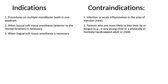The indications of this block include procedures involving multiple mandibular teeth that need to be operated or extracted in one quadrant, and buccal soft tissue anesthesia whenever required. When lingual soft tissue anesthesia is necessary, this block is also indicated. Contraindications include infection or acute inflammation in the area of injection, and patients who are likely to bite their lip or tongue, such as very young children or physically or mentally compromised adults or children.